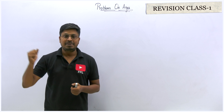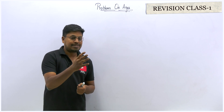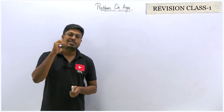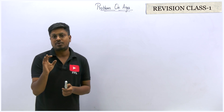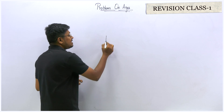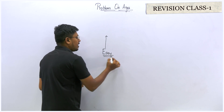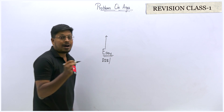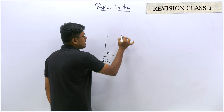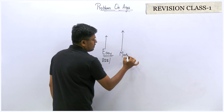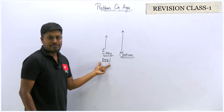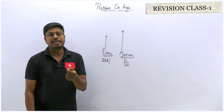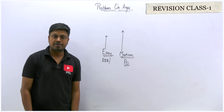IBPS Clerk and IBPS PO — which exam you are targeting is most important. If you are preparing only for RRB Clerk and IBPS Clerk, keep on solving miscellaneous topics on quantitative aptitude at a slightly easy level — I'm talking about the prelims exam. For RRB PO and IBPS PO prelims, you have to prepare medium-level questions. Don't keep concentrating on easy level if you are preparing for the PO level exam. Keep on solving medium-level questions on all quantitative aptitude and reasoning topics.